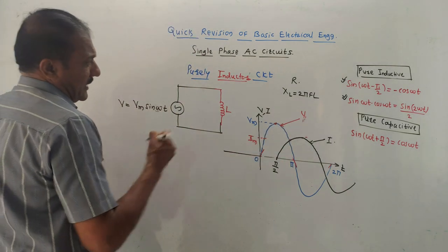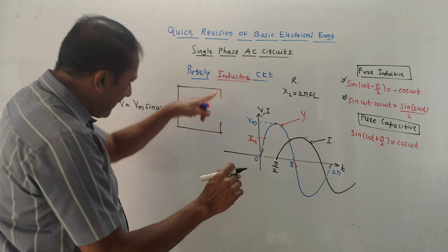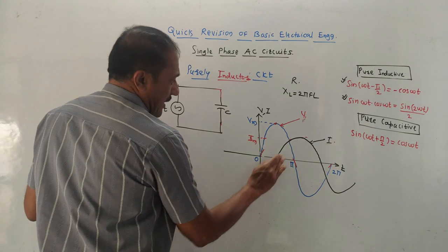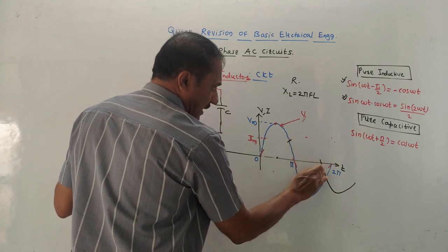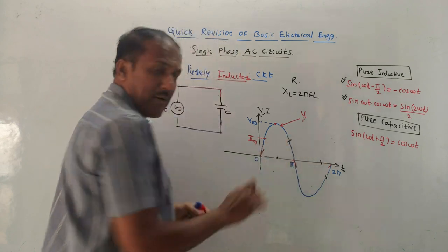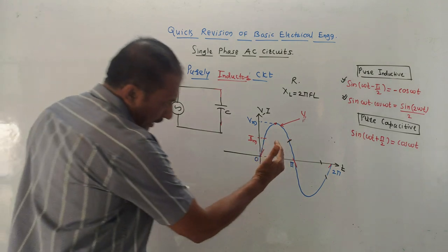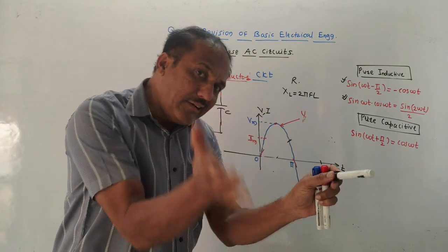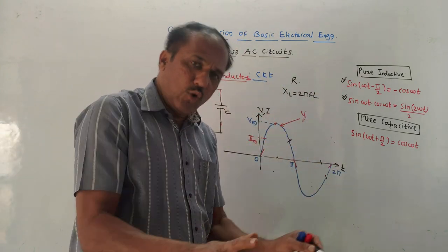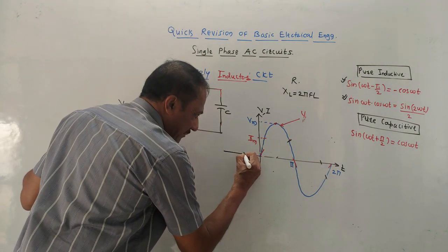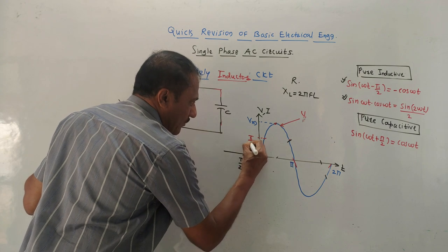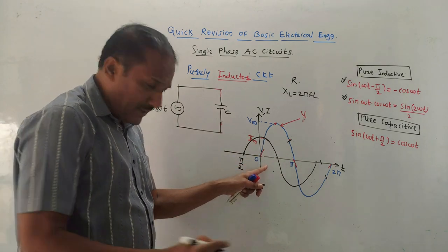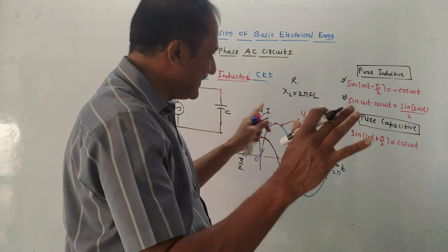Next is the purely capacitive circuit. Simply replace the inductor with a capacitor. In case of an inductor, current lags voltage by π/2. Whereas in case of a capacitor, current leads — it is leading the voltage by an angle π/2, so it will start earlier by some angle π/2. In case of a capacitive circuit, current is leading, whereas in case of an inductive circuit, current is lagging.